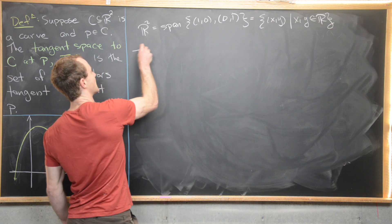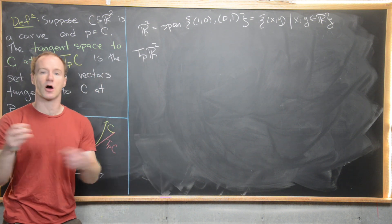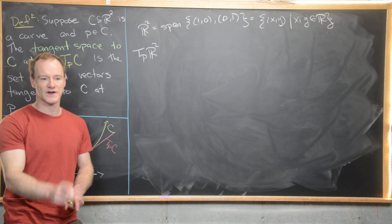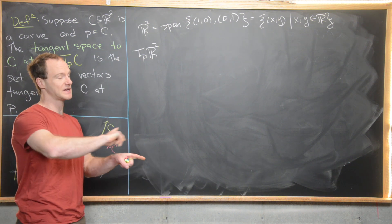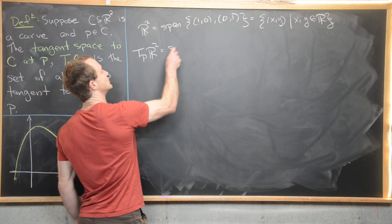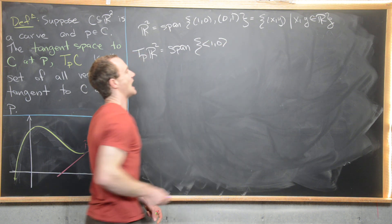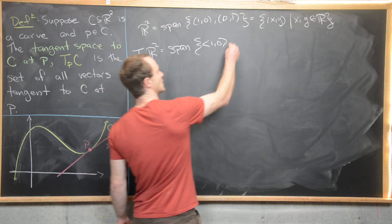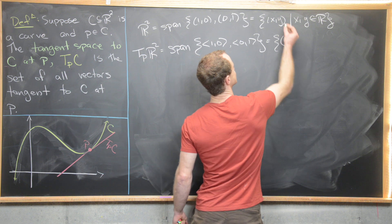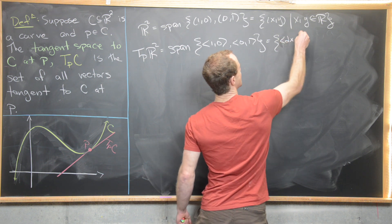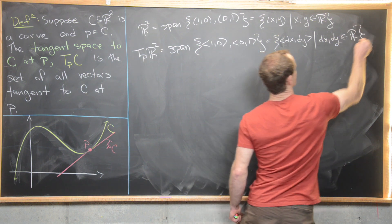Another thing we can think about is T_P of R2 — we pick an arbitrary point in R2 and look at all vectors tangent to R2 at that point. But that will be every vector, because R2 itself is flat. We'll notate this as the span of ⟨1, 0⟩ and ⟨0, 1⟩, and write this as ⟨dx, dy⟩ where dx and dy run over all real numbers.